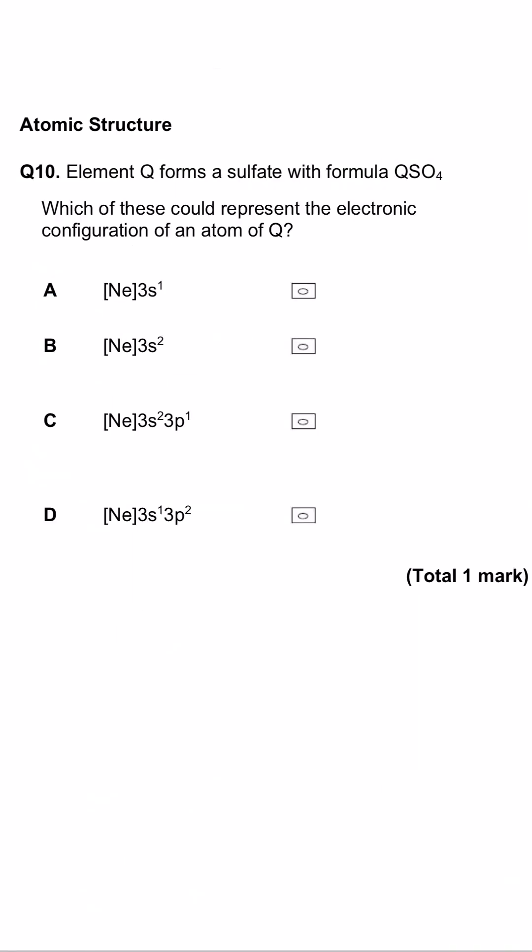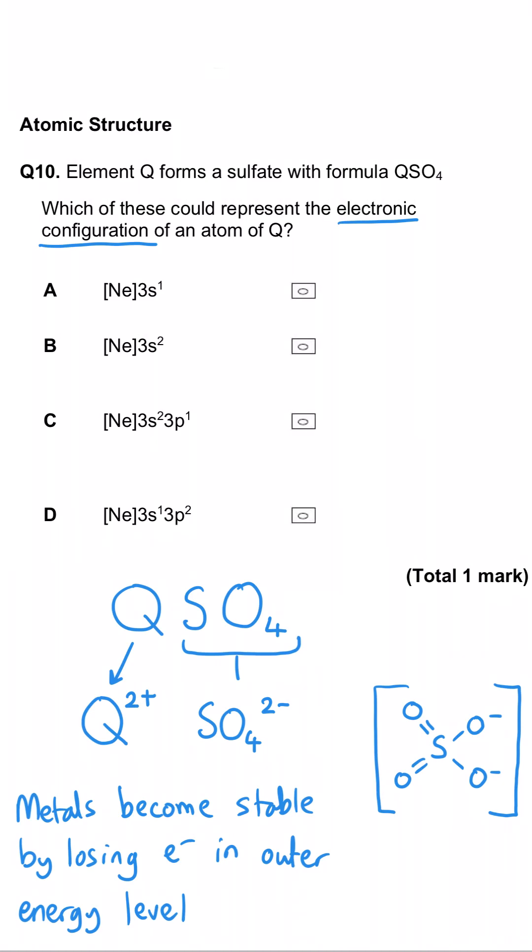This question is about electron configurations, but it's also about ionic compounds. We've been told that element Q is forming a sulfate of the formula QSO4. Now, you need to remember that SO4 forms a negative ion. It is negative 2-, and that means that whatever Q is, it must be canceling out the negative charge of the sulfate ion. So, in other words, it must have a 2+ charge. When atoms form ions, they lose the electrons in their outer energy level, the valence energy level, to become stable. And so, that means that before they lose their electrons, they must have had two electrons in their outer shell in order for Q to become stable once it's lost two.